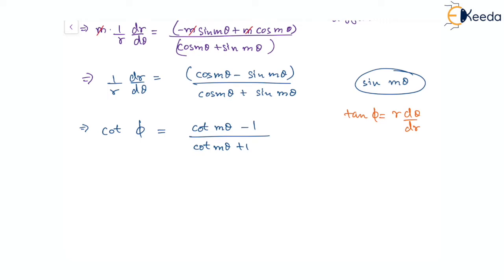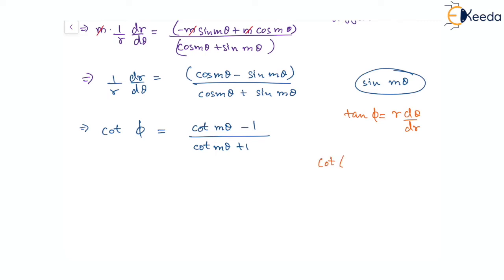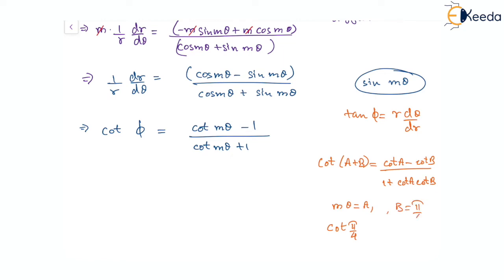This given expression is actually cot of (π/4 plus mθ). The reason being, if we remember, cot(a + b) equals (cot a · cot b minus 1) over (cot b plus 1). Here mθ is 'a' and the minus 1 or plus 1 terms come from cot(π/4), so b is π/4. Therefore, this expression is cot of (π/4 plus mθ).